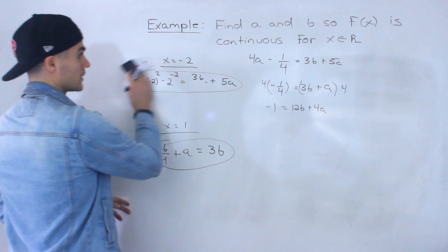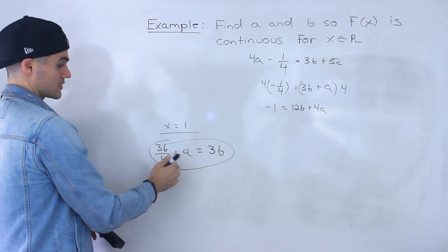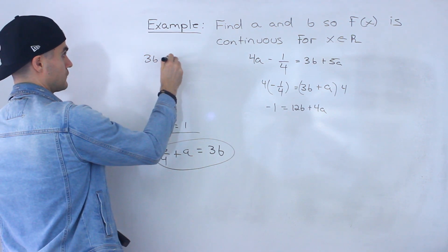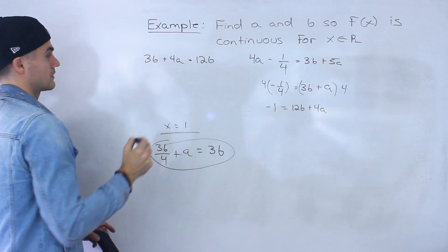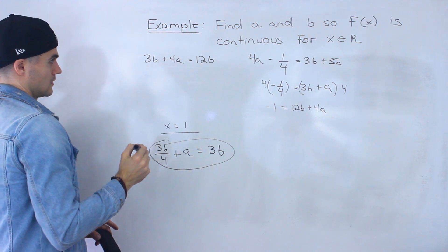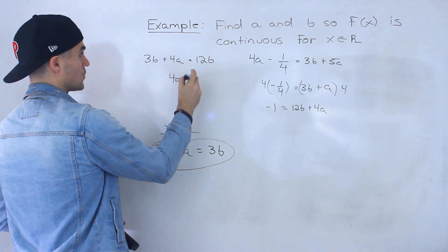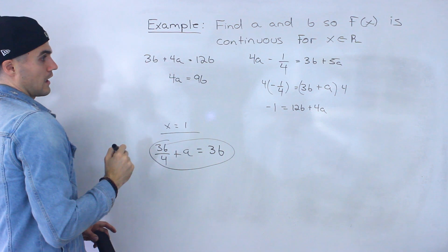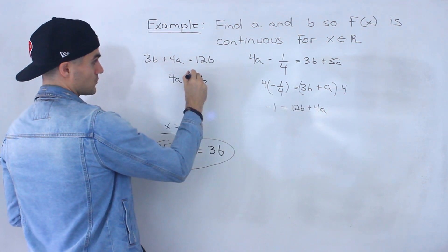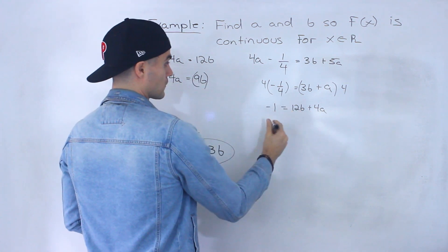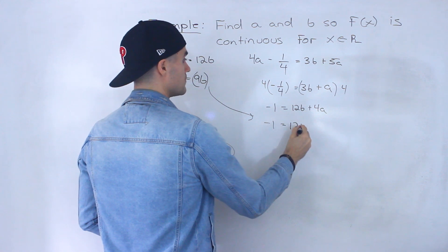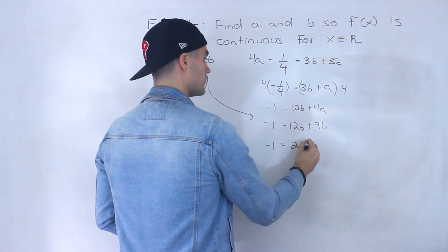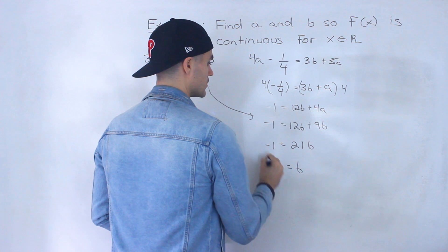For equation 2, multiplying everything by 4 gives 3b plus 4a equals 12b. Bringing 3b over gives 4a equals 9b. Since we have 4a in both equations, we substitute 9b into the first equation in place of 4a. So negative 1 equals 12b plus 9b equals 21b, which means b equals negative 1 over 21.